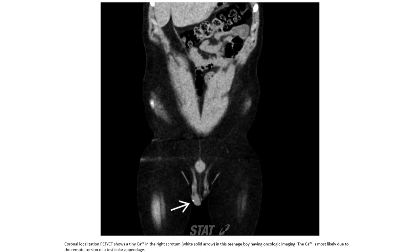PET CT scan shows a tiny calcification in the right scrotum in a teenage boy with an oncological history. This calcification is most likely due to remote torsion of a testicular appendage.